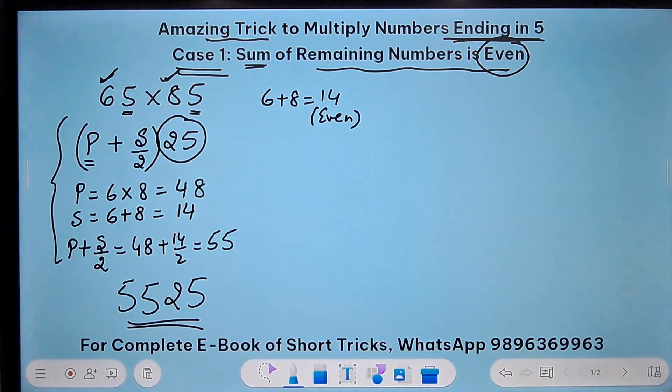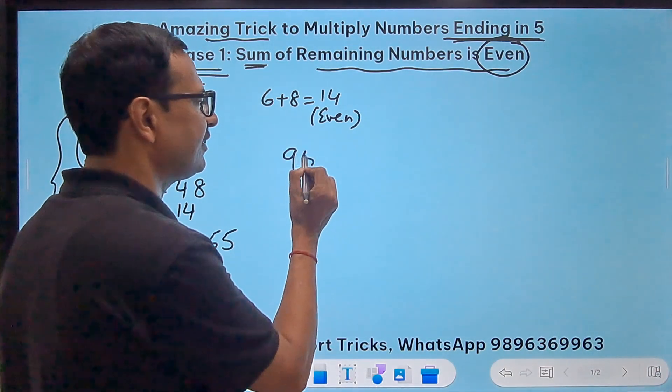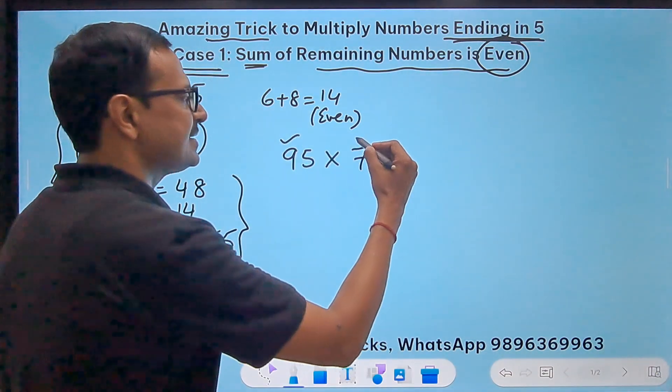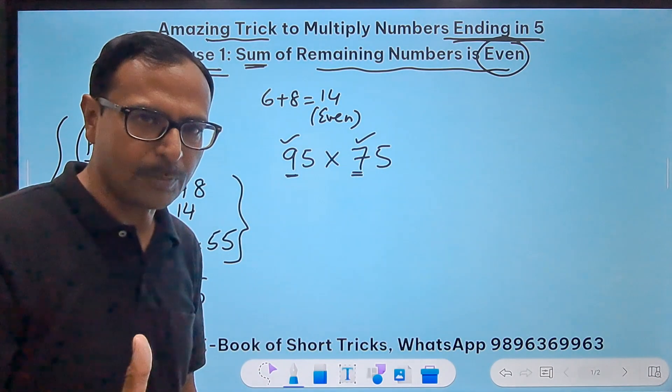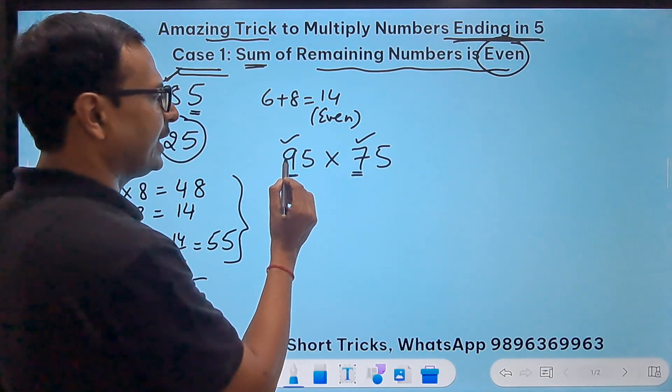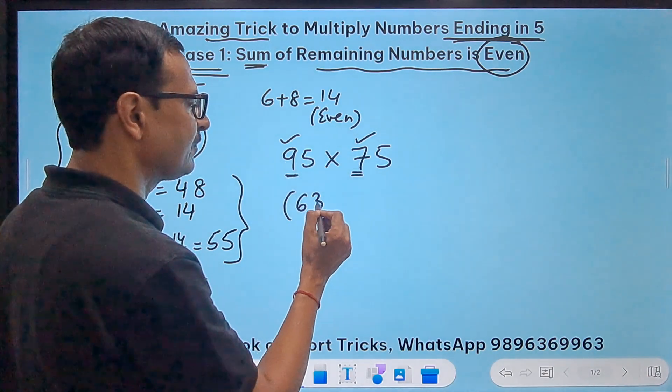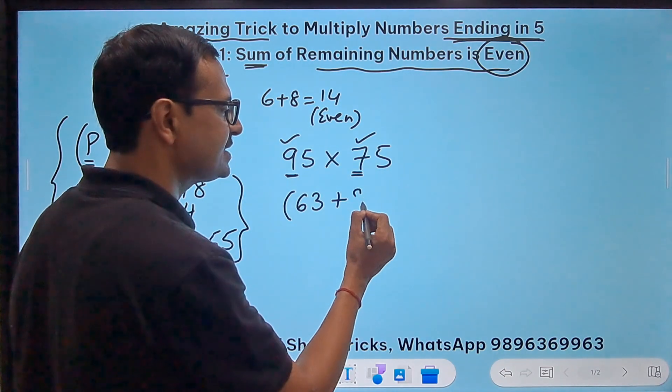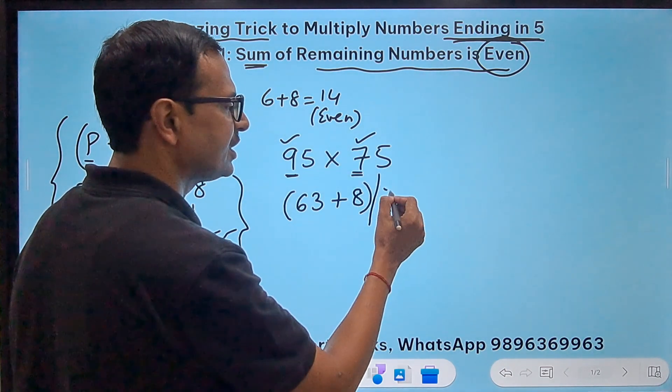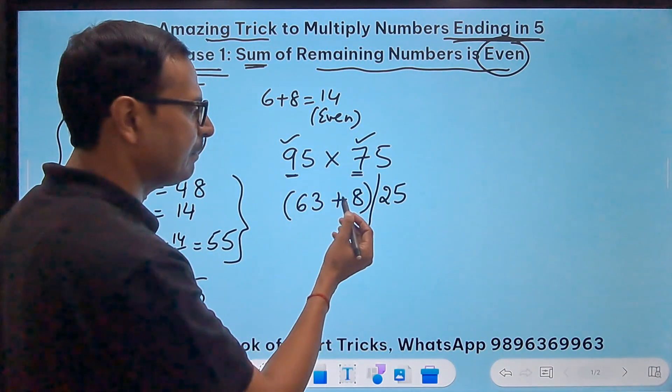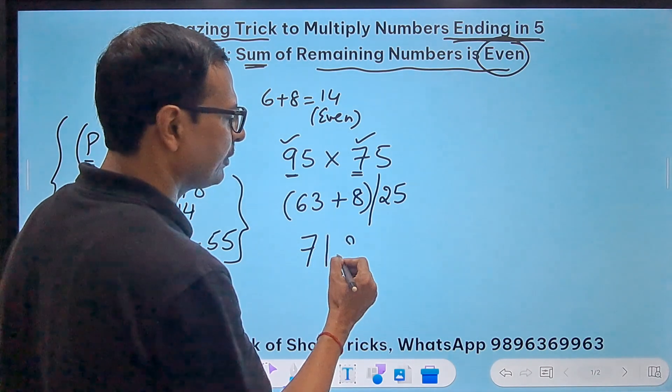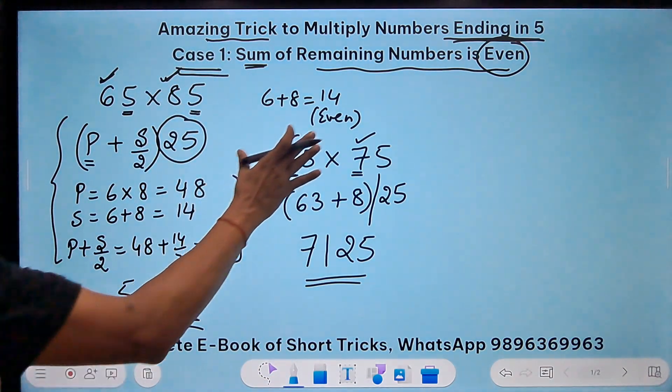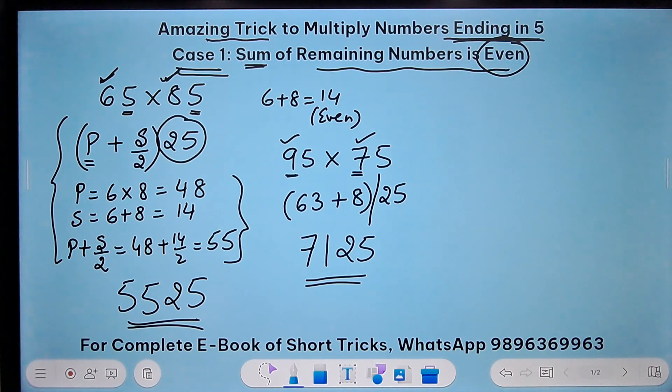Let's see another one, 95 and 75. I'm not going to write all these steps. 9 and 7 are the numbers apart from the 5s. The product of 9 and 7, 9 sevens are 63, plus the sum of 9 and 7 is 16 and half of 16 is 8, and I have to suffix 25 to the result. So 63 plus 8 is 71 followed by 25 gives me my answer. I've eliminated all the steps and got to my answer very quickly.